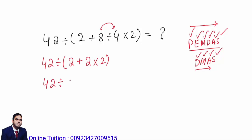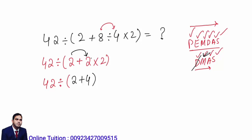So now: 42 divided by, in bracket, 2 plus 2 multiplied by 2. After solving the division inside the bracket, we have addition and multiplication left. According to DMAS, multiplication comes before addition. So multiply 2 by 2 first, which gives 4. If you do not follow the rule, you might add 2 plus 2 to get 4, then multiply by 2 to get 8 — but that is wrong.